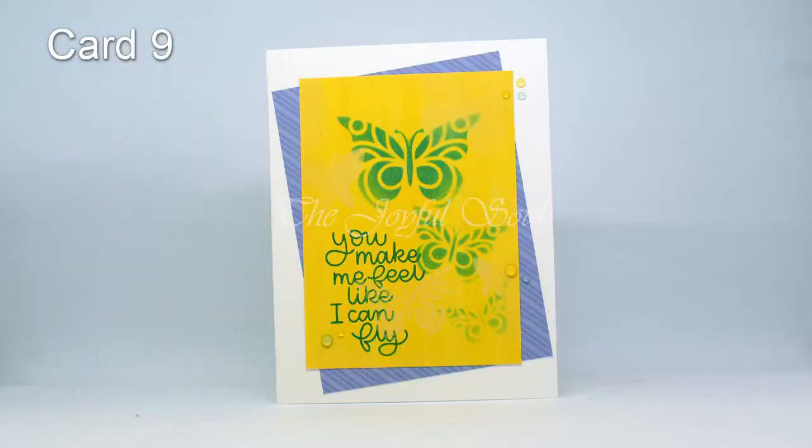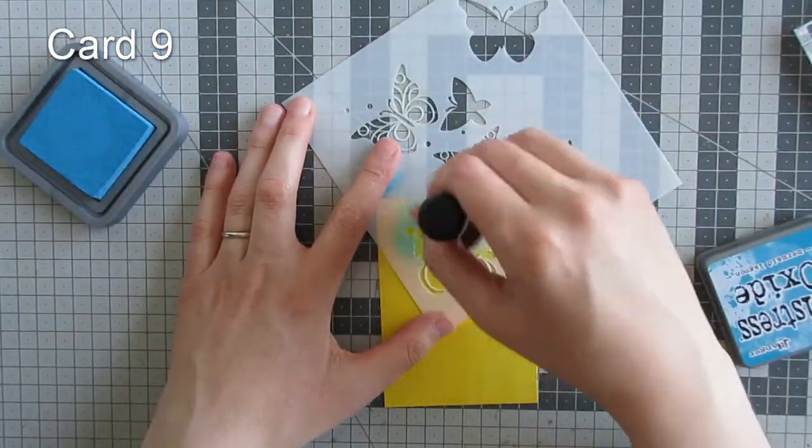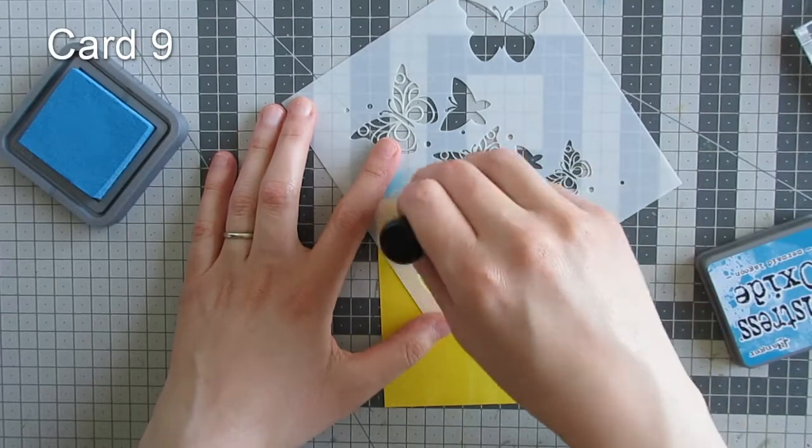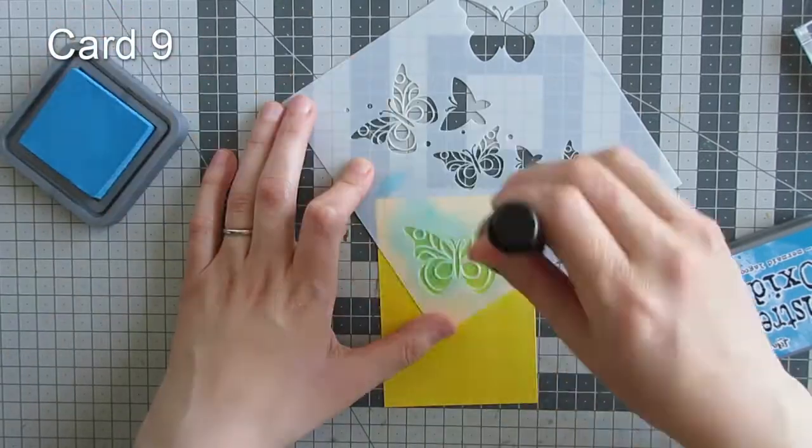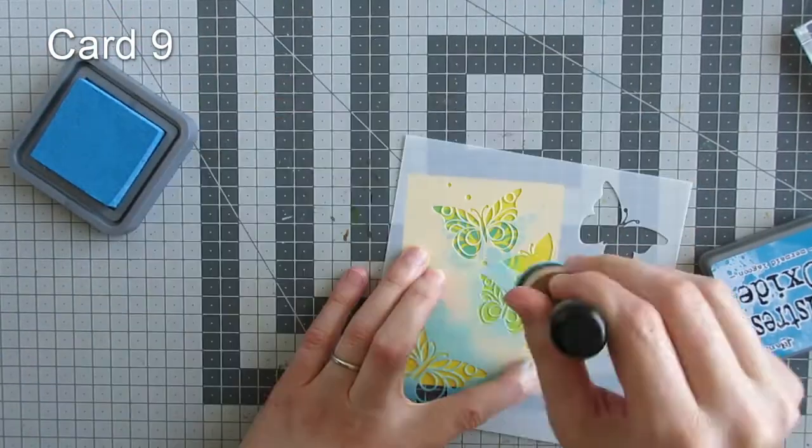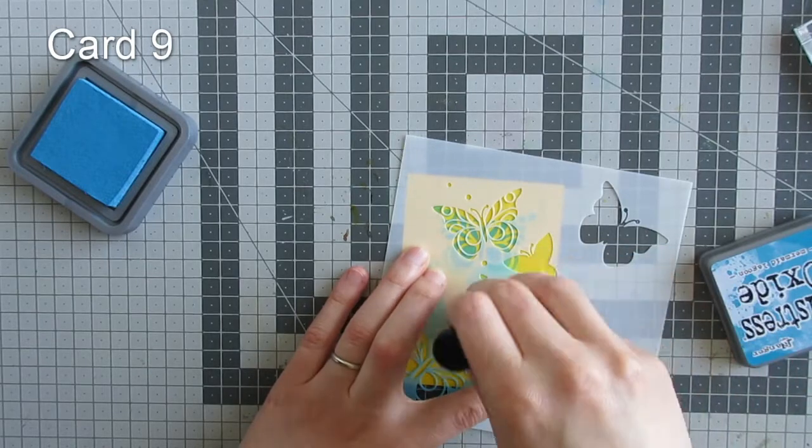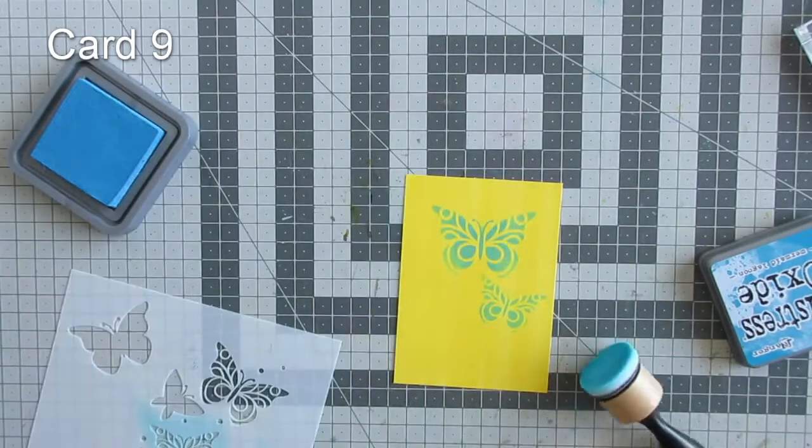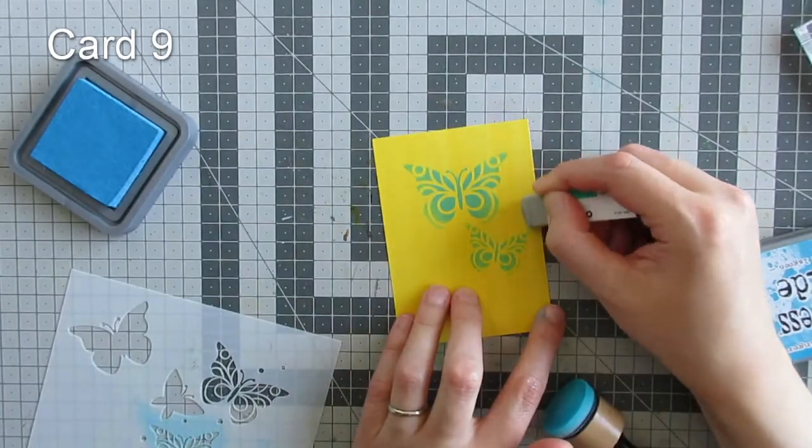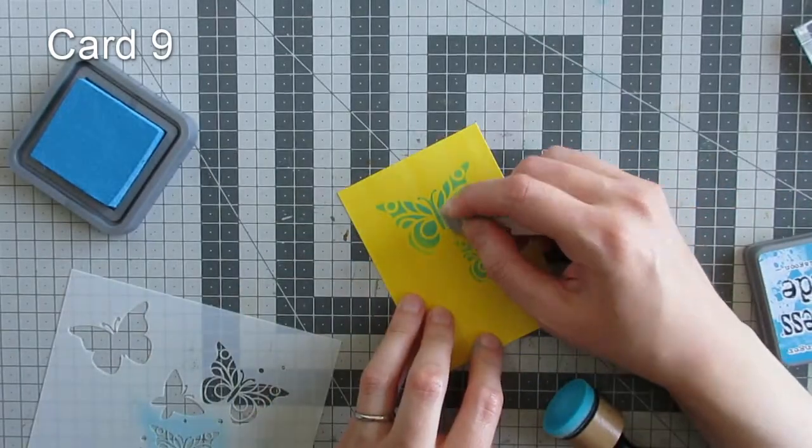Card number nine: I went back to the stencil. I really did struggle with the stencil. This one and the first one are probably my least favorite cards. I'm ink blending the butterfly onto a panel of the yellow patterned paper. I did go over the edge a bit here, so I'm using my sand eraser to remove the areas where the ink got on the panel where I didn't want it.